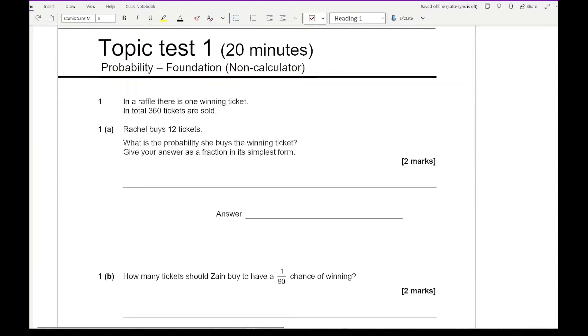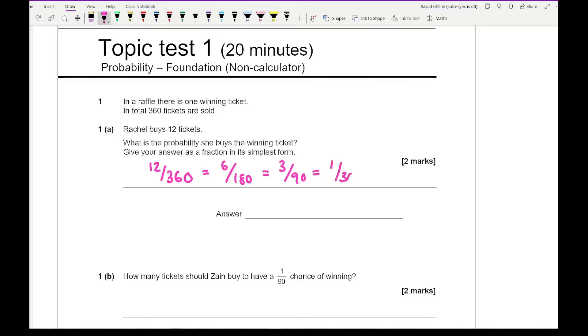The first question says that in a raffle there is one winning ticket. In total 360 tickets are sold. Rachel buys 12 tickets. What is the probability that she buys the winning ticket? Give your answer as a fraction in its simplest form. So she's bought 12 out of 360. We need to simplify this, so dividing by 2 that becomes 6 over 180, which then becomes 3 over 90, which then becomes 1 over 30.